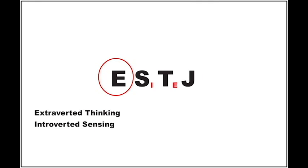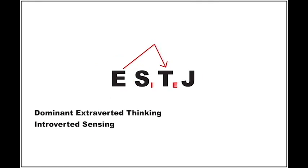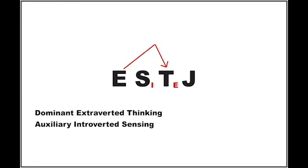Step 3: now we look at the first letter of the type. As this type is an extrovert, this means that the extroverted function, thinking, is dominant. If thinking is dominant, then the other function, sensing, must be the auxiliary.